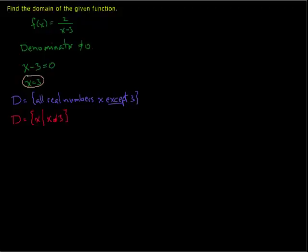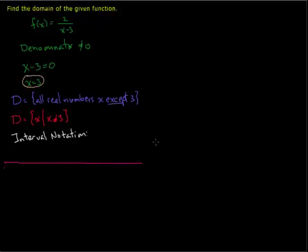One final notation we can use is called interval notation, which is a useful shorthand. It's nice to have a number line to help visualize how interval notation works. The number line goes from negative infinity on the left to positive infinity on the right, and our point of interest is at 3. Our domain is all real numbers except 3, so we exclude 3 by drawing a little hole on the number line.